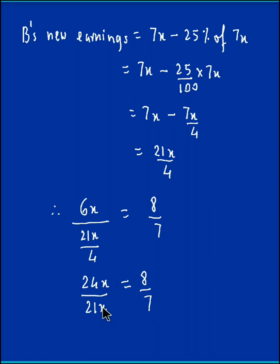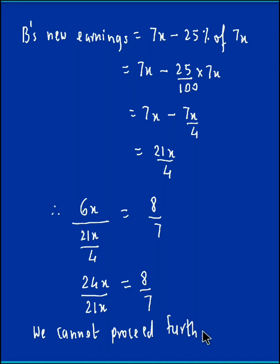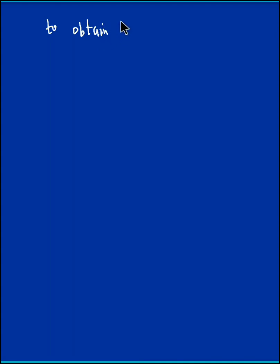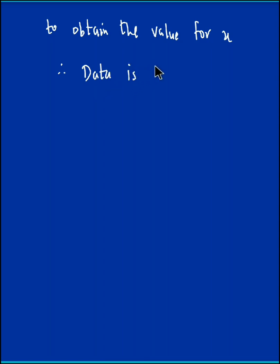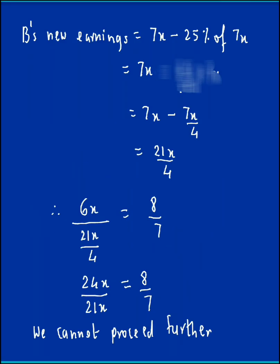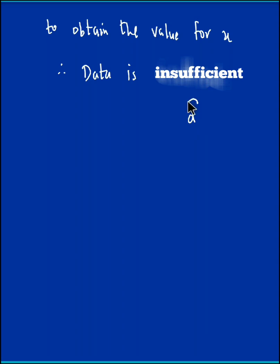Since x gets cancelled off, we are left with no variable. Hence something is missing — we cannot proceed further to obtain the value of x. Therefore we can say that some data is missing. The final answer is that the given data is insufficient, and hence we cannot find the value of x. Looking at the options, option D — data is inadequate — is the correct answer.